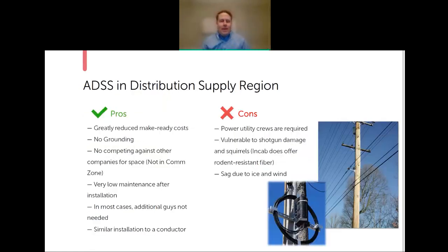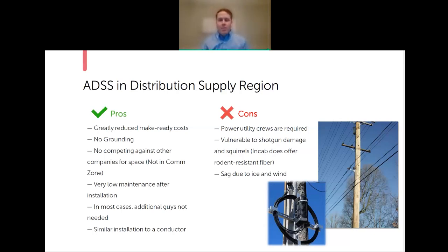ADSS in the distribution supply region is, in my opinion, the most economical and easiest way for an electric utility to deploy fiber to the home. The big thing is that ADSS allows you to greatly reduce make-ready costs, simply because ADSS cable is a very robust cable that can cover very long spans, so your existing distribution infrastructure is already readily usable.